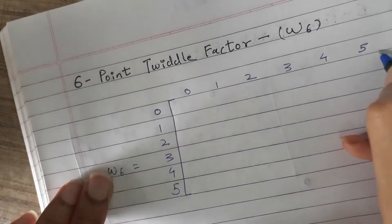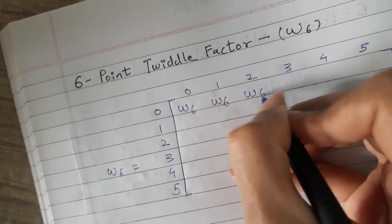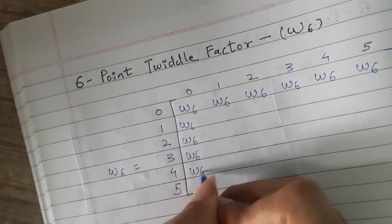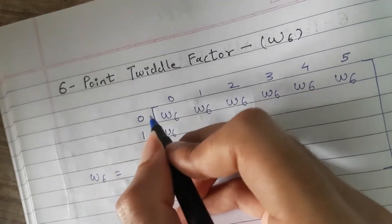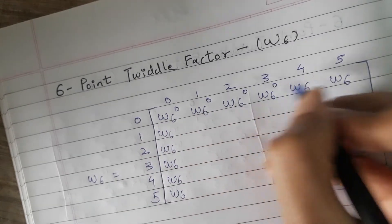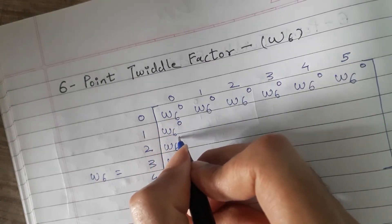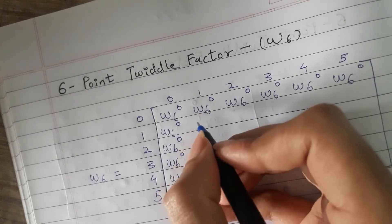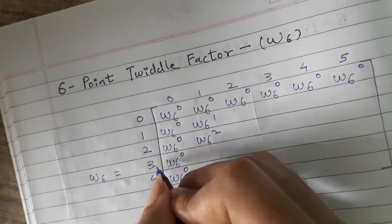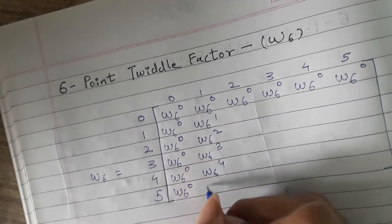So I will write the matrix of the six point twiddle factor. For the first row, all exponents are 0. Similarly, 1 into 1 gives W6 raised to 1, 2 into 1 gives W6 raised to 2, 3 into 1 gives W6 raised to 3, 4 into 1 gives W6 raised to 4, 5 into 1 gives W6 raised to 5.